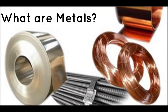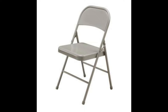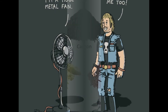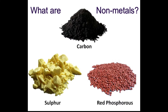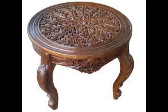What are metals? Metals are hard materials used for many purposes, e.g. chair, table, fan. What are non-metals? Elements whose properties are different from metals are known as non-metals.